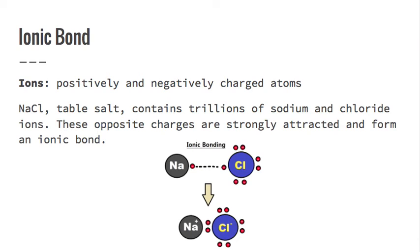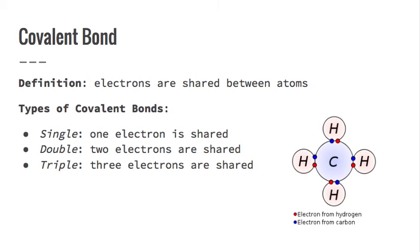Moving on to covalent bonds. An ionic bond is when we transfer electrons, but a covalent bond is when we share electrons between atoms. There are three types of covalent bonds: a single bond, a double bond, and a triple bond — just as it sounds.